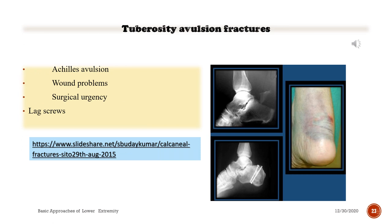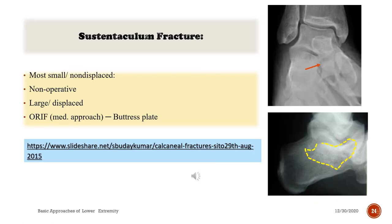Tuberosity avulsion fractures involve Achilles avulsion, which carries wound problems and is a surgical urgency; treated with lag screws. Sustentaculum fractures are mostly small and non-displaced and are managed non-operatively. If large and displaced, open reduction and internal fixation via a medial approach with a buttress plate technique is used.